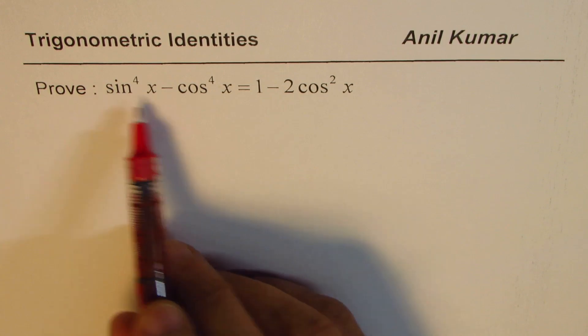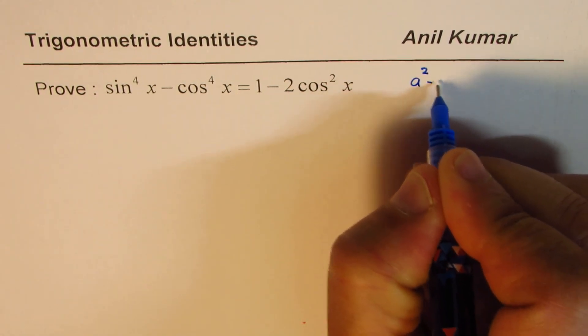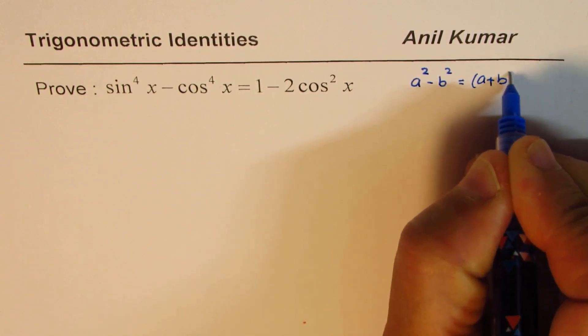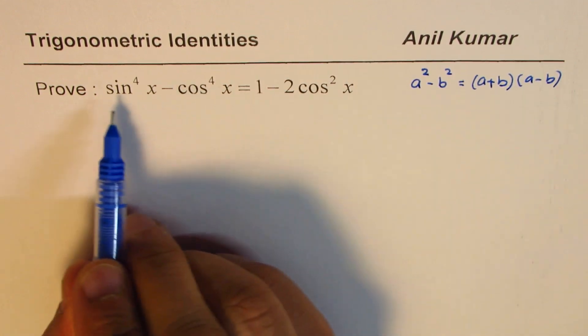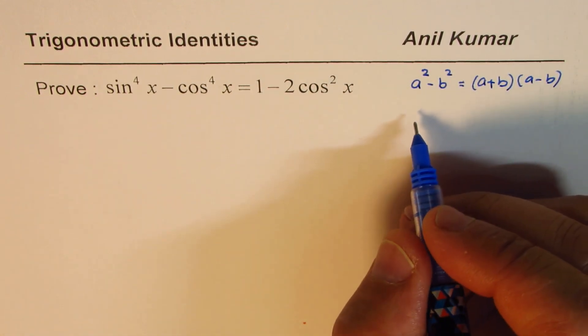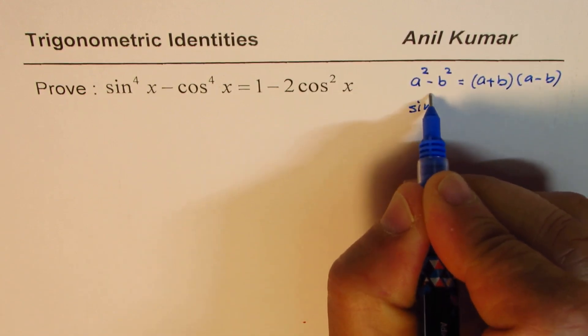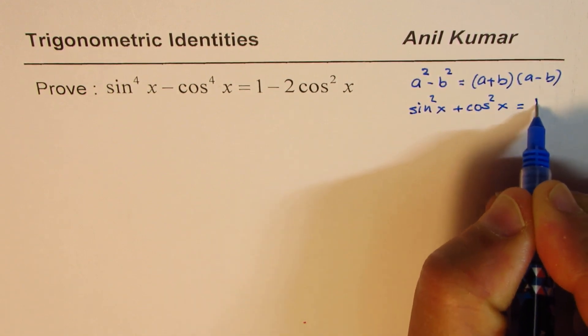As soon as you see these powers you are reminded of what? Well, a few formulas to keep in mind are difference of squares: a² minus b² could be factored as (a + b)(a - b), and also the basic fundamental Pythagorean identity for trigonometry which is sin²x plus cos²x equals 1.